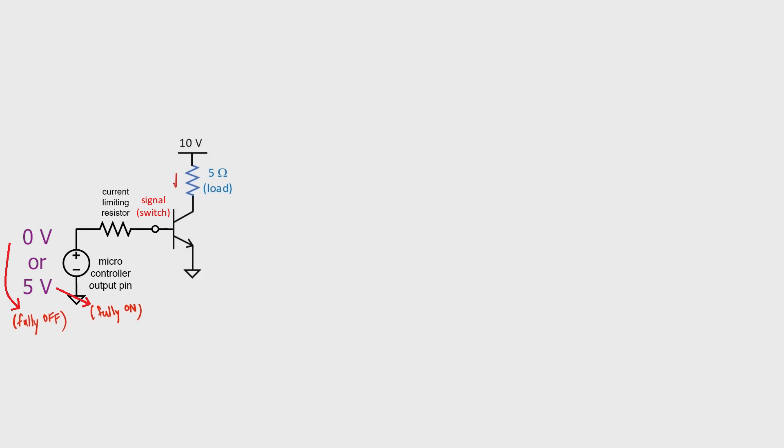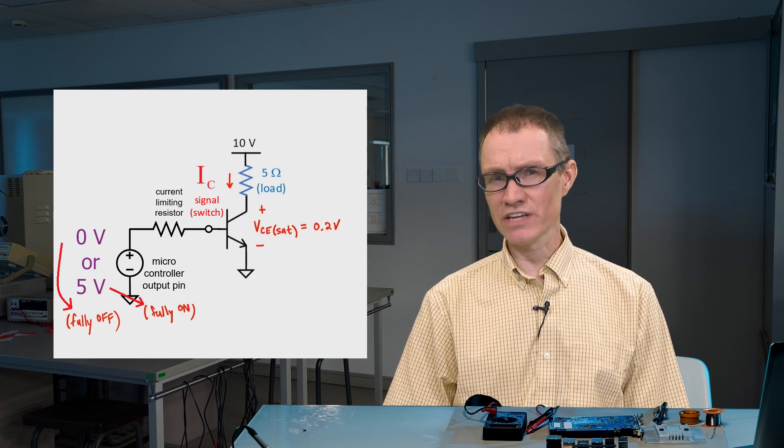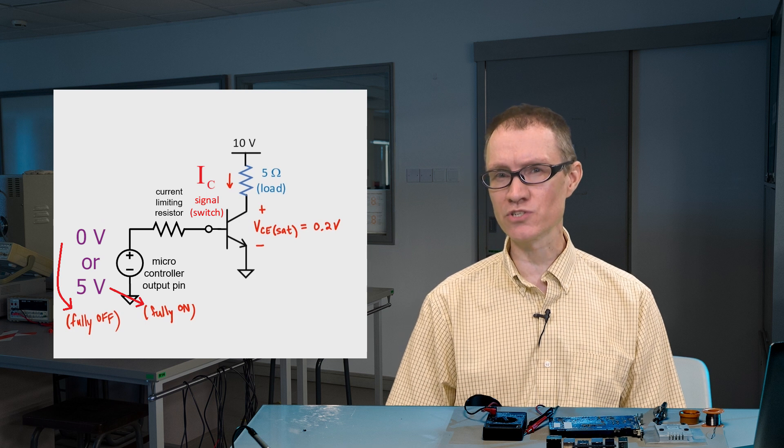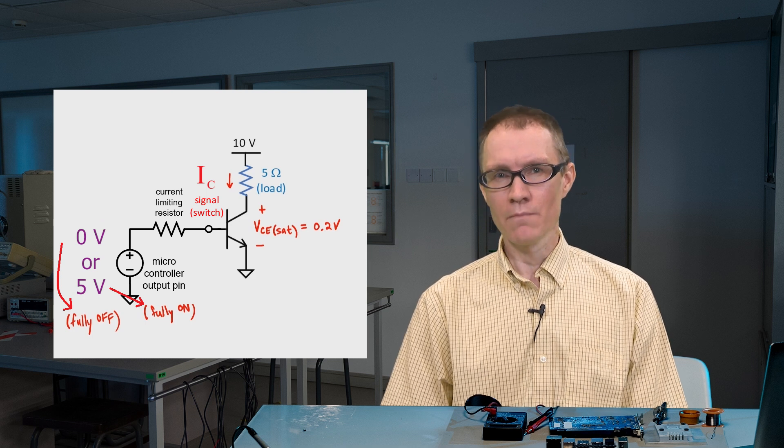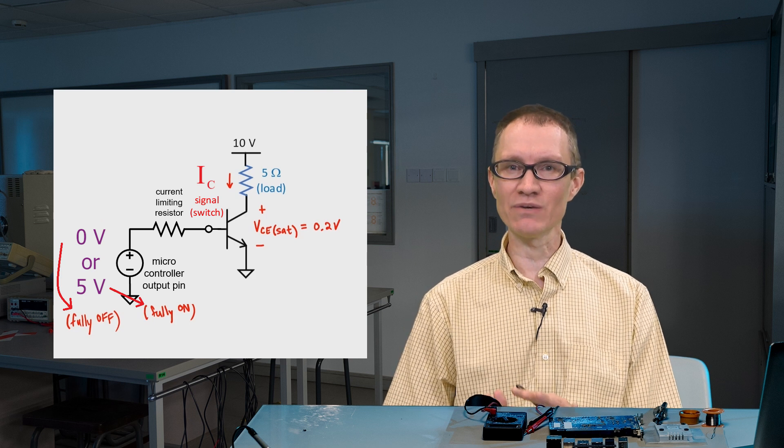For any given IB, we're going to have a collector current flowing down through this resistor. Let's find it using Ohm's law. We'll assume a saturation voltage of 0.2 volts. You might have noticed when I worked problems in previous videos I would often assume 0.7 volts here, but that's because I was trying to make sure that the transistor definitely wasn't saturated.